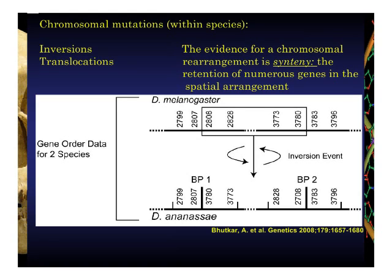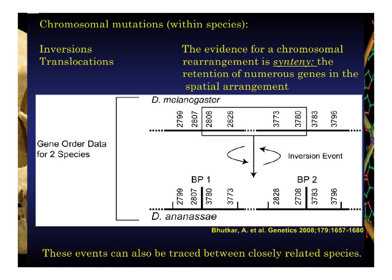Now, you can apply this same logic to look at gene order in blocks between different species. And flies are actually an excellent resource for this because we now have the complete genome sequence for many different species of fruit flies. So between closely related species, we can begin to investigate these issues as well.